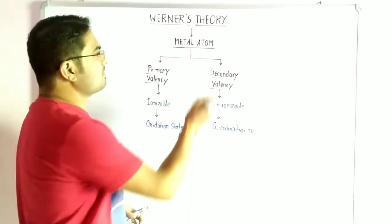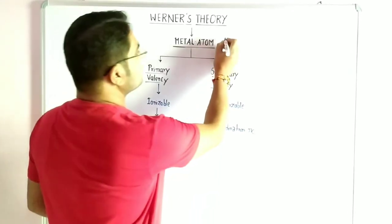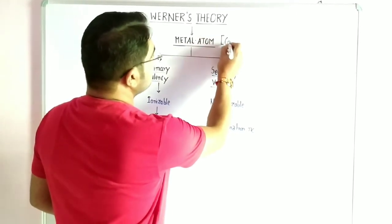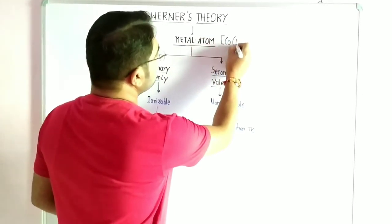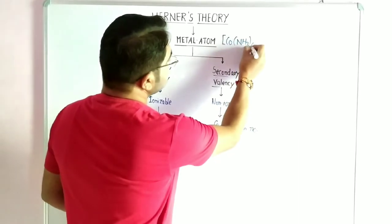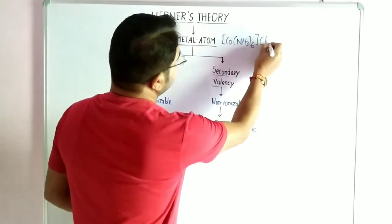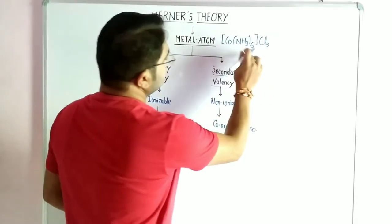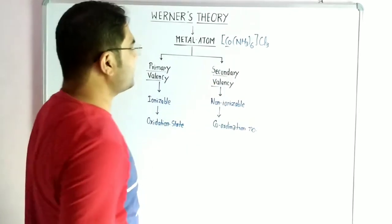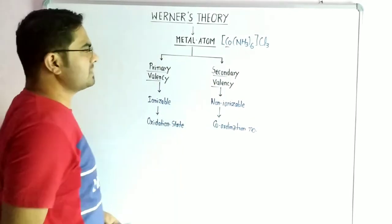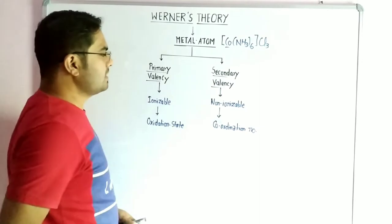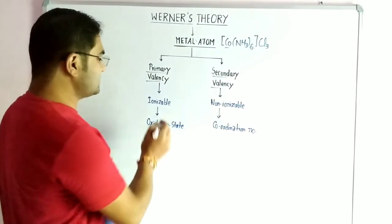For example, Werner's example in cobalt complexes is [Co(NH3)6]Cl3. In this complex, Co is the central metal atom. This metal atom comprises two valencies: primary valency and secondary valency.